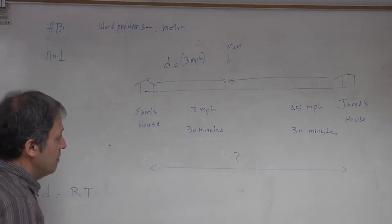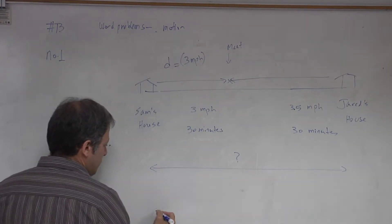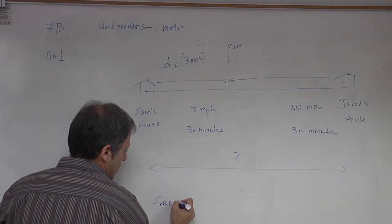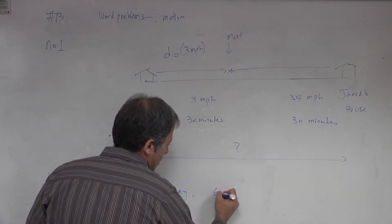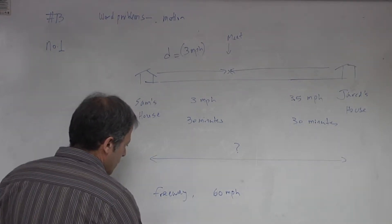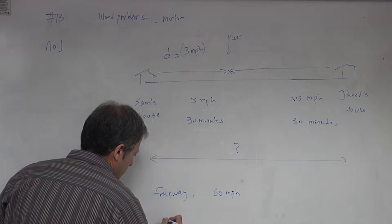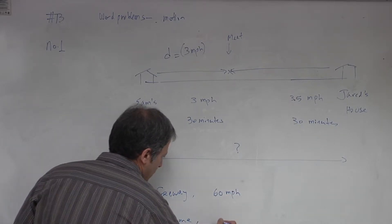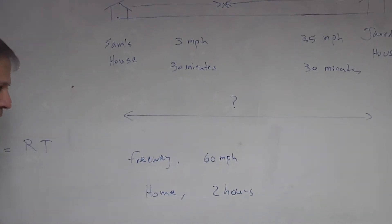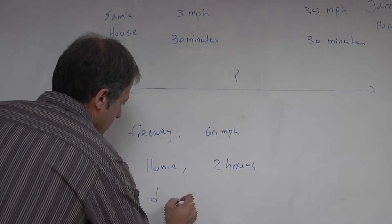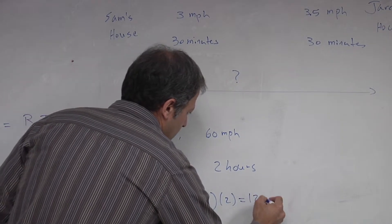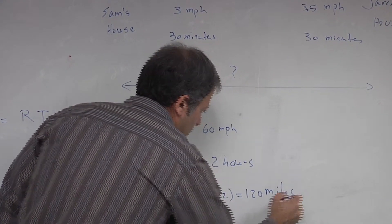But remember that, let me just use a slightly different example. Let's say that you're on the freeway and you're going at the rate of 60 miles per hour and you get home in about two hours. So how far did you travel? That's distance equals rate which is 60 times two hours which will give you 120 miles all together.